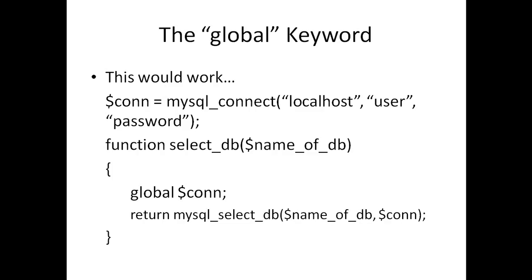So this would work: $con equals mysql_connect with localhost, user, password. Then the function select_db takes name_of_db as a parameter. Inside that function, the first thing we do is declare 'global $con', then return mysql_select_db(name_of_db, $con). By using 'global $con', the function goes out a level and says 'okay, $con is set to this particular connection' — and that's how you utilize a variable passed to or accessed by the function using the global keyword.